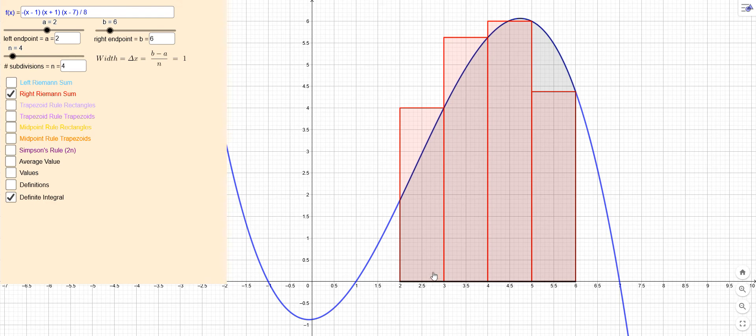And so notice what we have here is a right Riemann sum. We're going to the right side of each one. And notice when the function's increasing, the right one goes over, sticks out some. But when the function is decreasing, the right Riemann sum is going to be under.